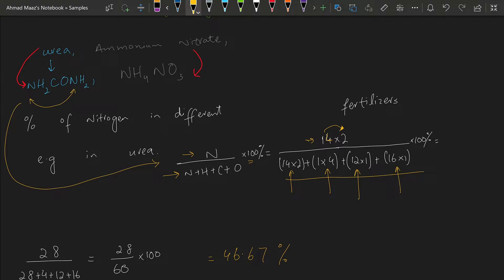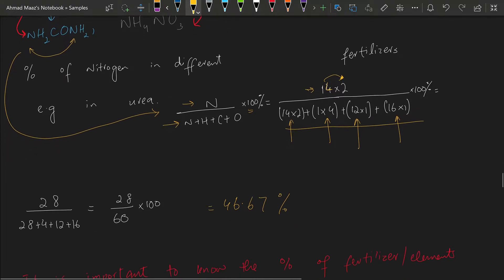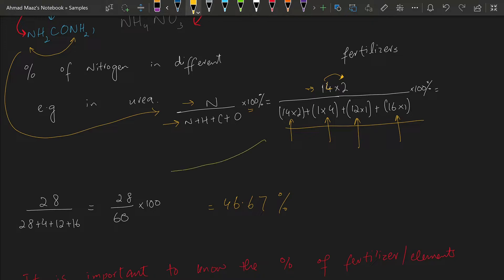Continuing the calculation for urea: we have one oxygen which is 16 × 1, all multiplied by 100. The numerator is 28 (from 2 × 14 for nitrogen). The denominator is 28 + 4 + 12 + 16 = 60. So the percentage of nitrogen in urea is 28/60 × 100 = 46.67%. This means 46.67% of urea is nitrogen.